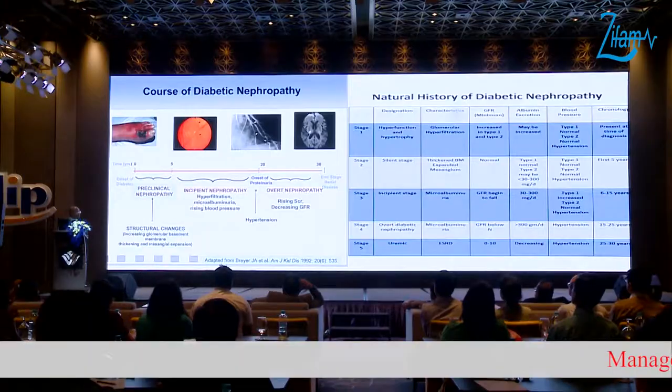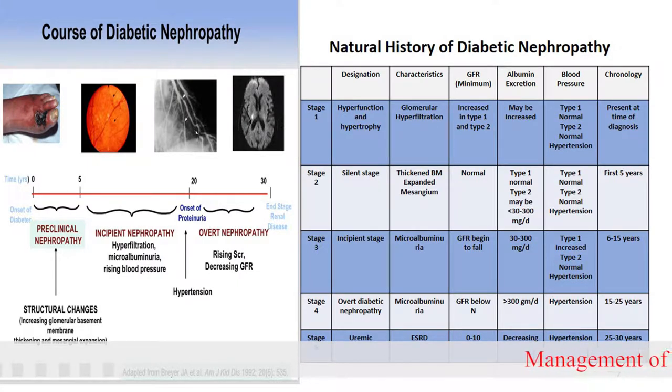In type 2 diabetes, the duration of diabetes should be more than five years for diabetic kidney disease. If the duration is less than five years, or there is a family history of hereditary disease or polycystic kidney disease, you have to think about other causes. You must differentiate even in a diabetic patient: is it due to DKD or another cause?